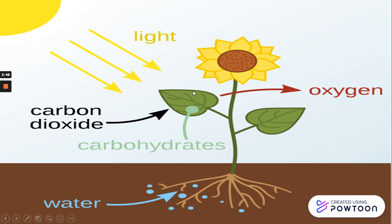النبات — the leaves — بيبقى فيها water وبيبقى فيها carbon dioxide، وبتاخد الطاقة من الشمس. Okay: water, carbon dioxide, and they take energy from sunlight — starting to make the food. The result: بعد لما بيصنعوا الاكل بيعملوا sugar.